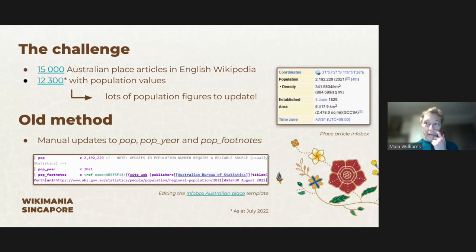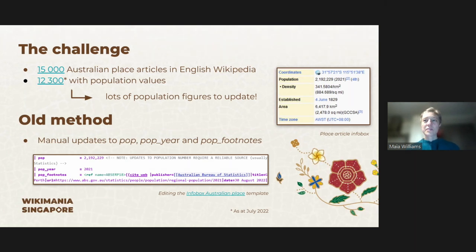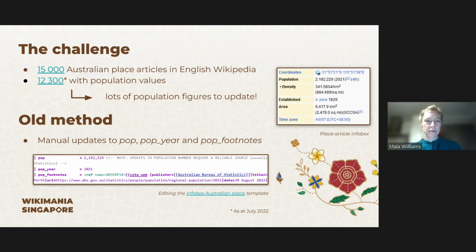So what was the challenge? There are about 15,000 Australian place articles in English Wikipedia and about 12,300 of those have population values in the info box. The status as of last year was that all these population values needed to be manually updated whenever there was new census data or population data released. You can imagine this is a huge amount of manual work and prone to error through copying and pasting.